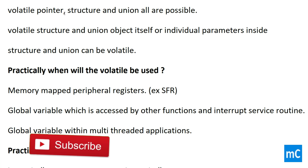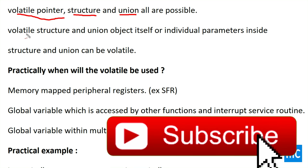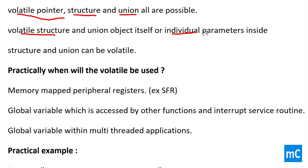Different possibilities of the volatile keyword: volatile pointer, structure, and union — all these are possible. A union object or structure object can be volatile, and also individual members inside the union or structure can be volatile. All these are possible.